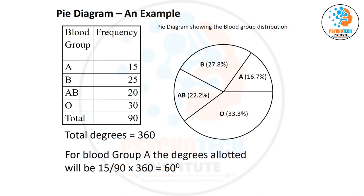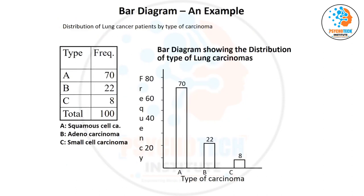You cannot use categories for continuous data. The bar diagram is again for qualitative data. Each bar represents each category.